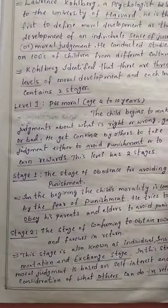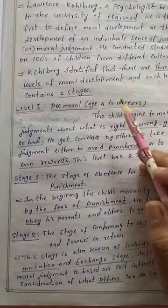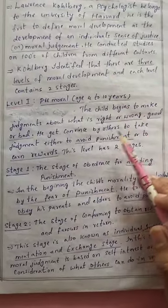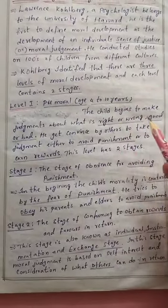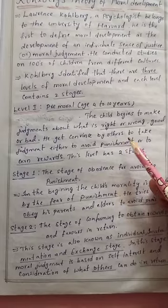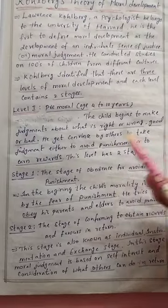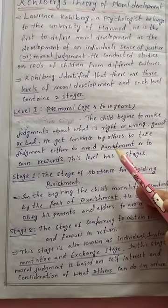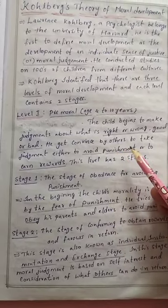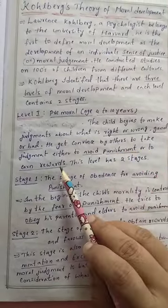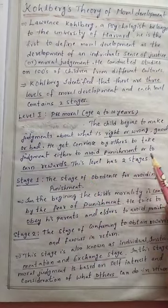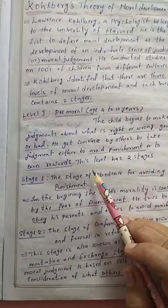Level 1: Pre-moral Age — ages 4 to 10 years. Here the child begins to make judgments about what is right or wrong, good or bad. The child gets convinced by others to make judgments either to avoid punishment or to earn rewards.